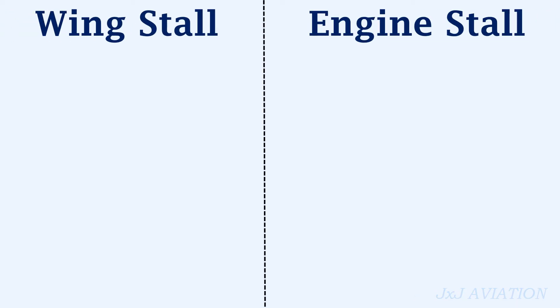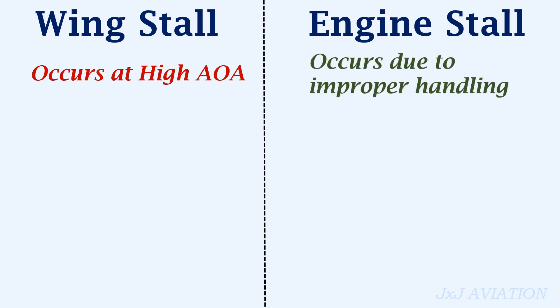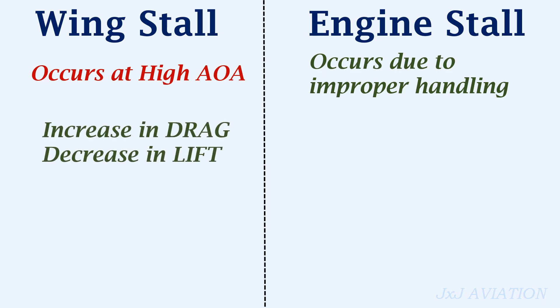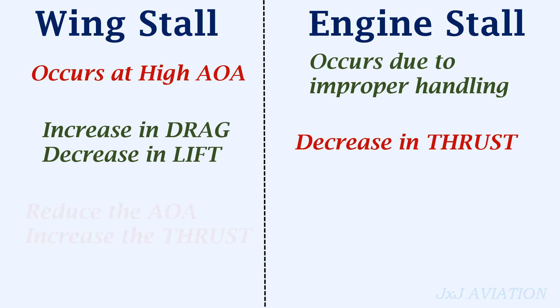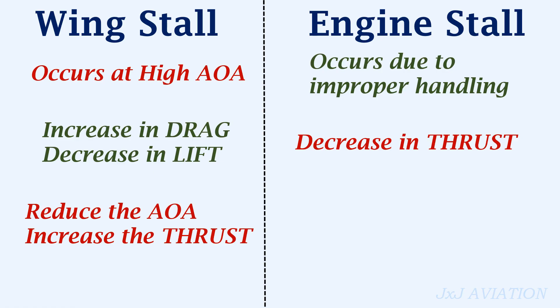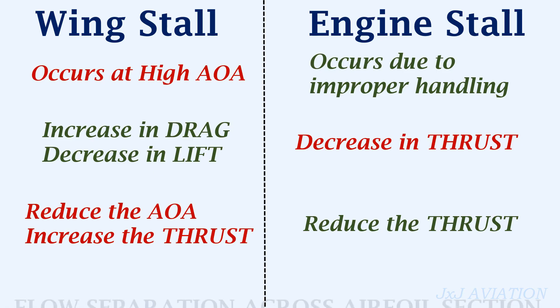Let's summarize a wing stall and an engine stall. A wing stall occurs at high angles of attack, whereas an engine stall may occur due to improper handling of the engine. A wing stall leads to an increase in drag and a decrease in lift, and an engine stall leads to a decrease in thrust. To recover from a wing stall, the angle of attack has to be reduced and the thrust has to be increased. To recover from an engine stall, the thrust has to be decreased and then increased gradually if the stall conditions no longer exist. A common similarity between a wing stall and an engine stall is that they both occur due to flow separation across the airfoil section.